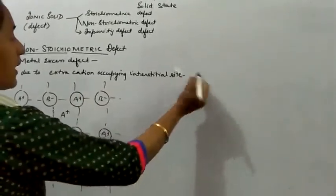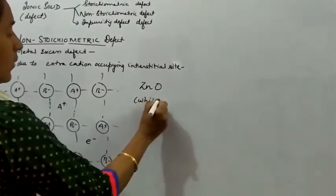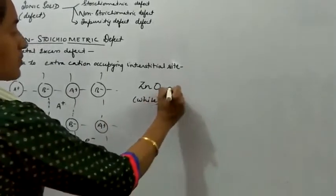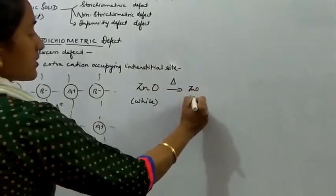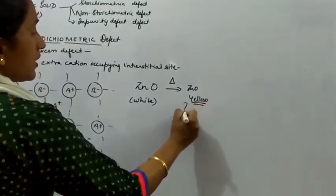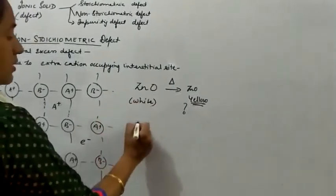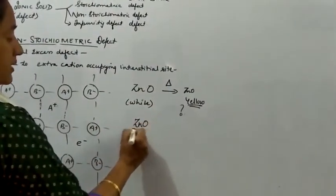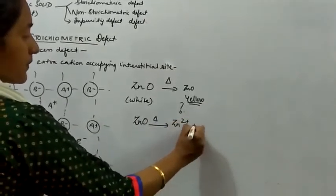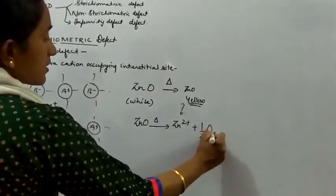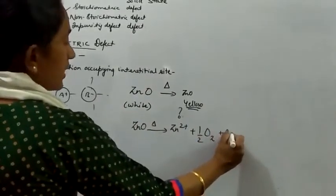Due to extra cations occupying the interstitial site, we take the example of zinc oxide, which is generally white in color. It has been observed that when heated, the color of zinc oxide changes to yellow. The equation shows: ZnO when heated gives Zn2+ ion, half O2 to balance the reaction, and two electrons are released.